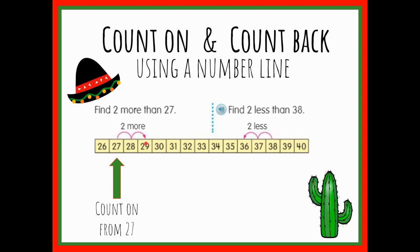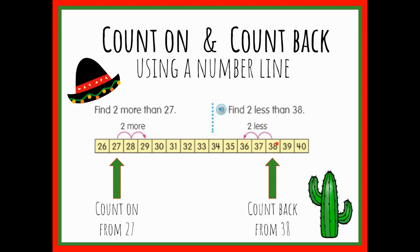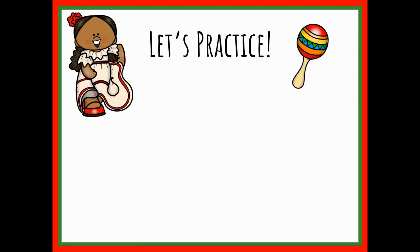Starting on 27, we count on: 28, 29 — landing on the number 29. So 29 is two more than 27. On the right example, we're finding two less than 38. We use 38 as our starting number and count back because we see the words 'less than.' Starting at 38, we count back one, two hops, landing on 36. So 36 is two less than 38.